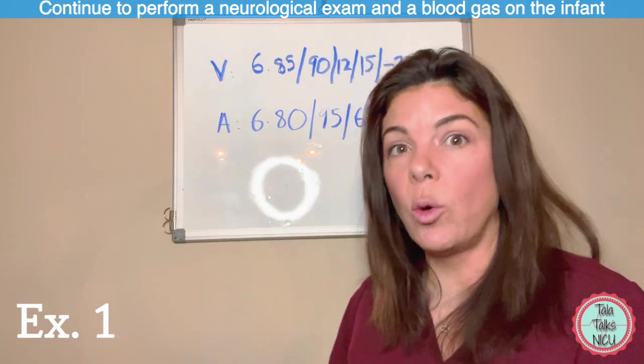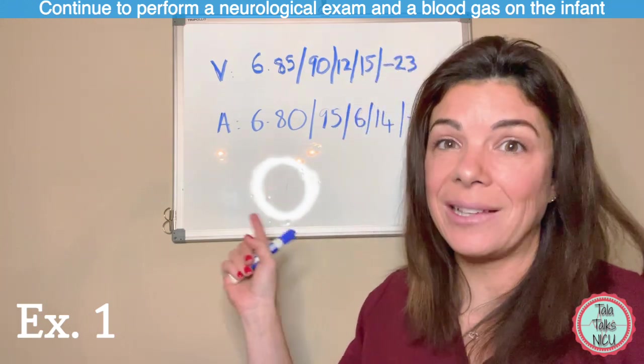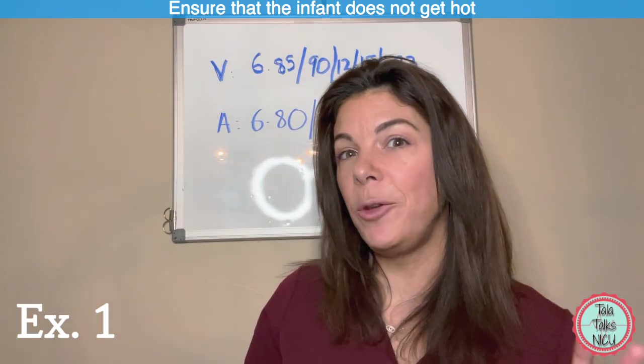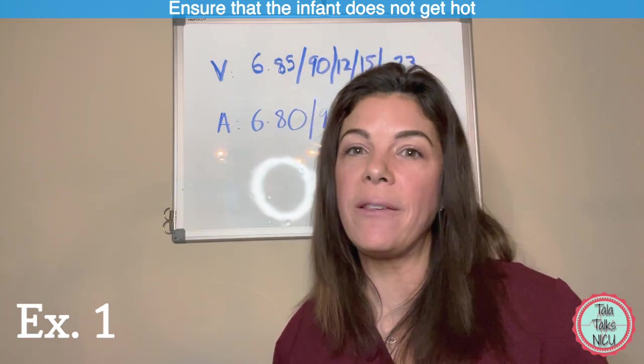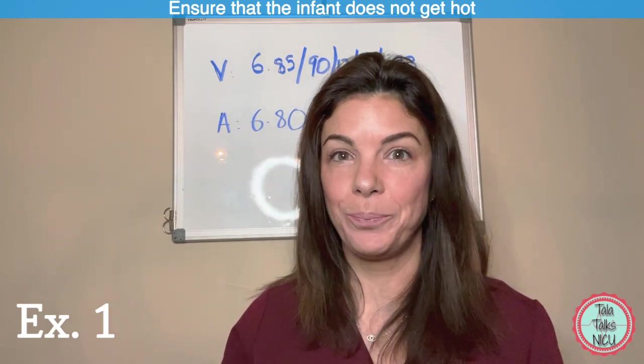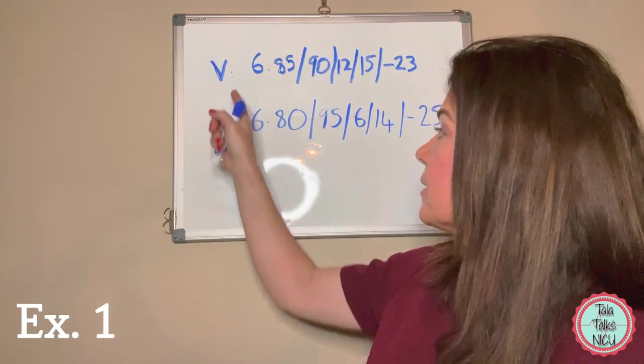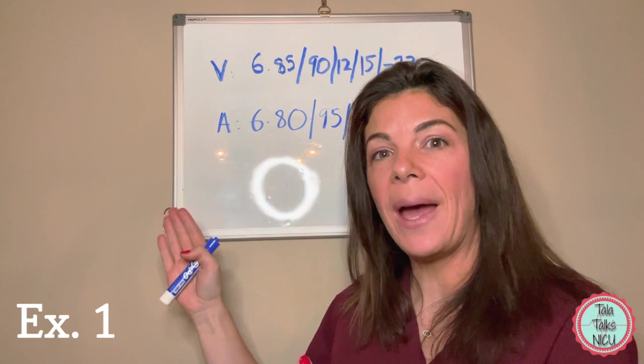If I saw a cord blood gas like this, even if I was told that the baby looks good, which is honestly very unlikely, I would still go and make sure that I did a good neurological exam on the baby and probably get a gas on the baby because these numbers are so bad. In the meantime, you don't necessarily have to start passively cooling the baby, but at least make sure that the baby doesn't get hot.